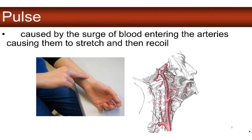Remember, arteries are muscular and elastic. When we feel the pulse — either the carotid pulse or the radial pulse — what we're feeling is a surge of blood entering the arteries during the systole of the cardiac cycle, and then the recoil as blood moves forward during diastole. So our pulse is essentially an indirect measure of the cardiac cycle.